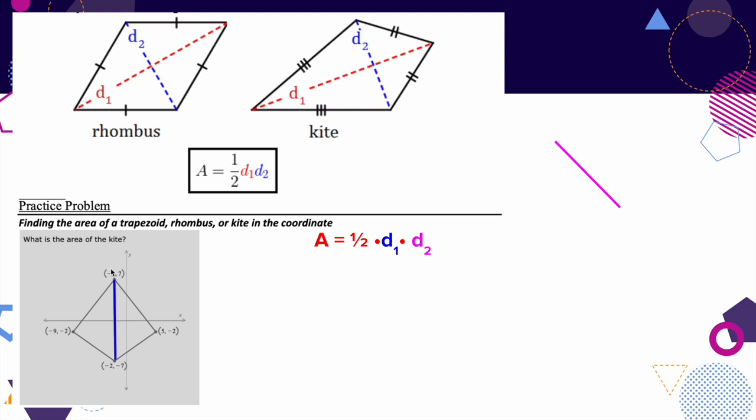Going straight down, I'm looking at the y-coordinates, not the x-coordinates. I have seven above the x-axis and seven below, so it's seven minus negative seven, which is seven plus seven, giving me 14. That's my first diagonal.